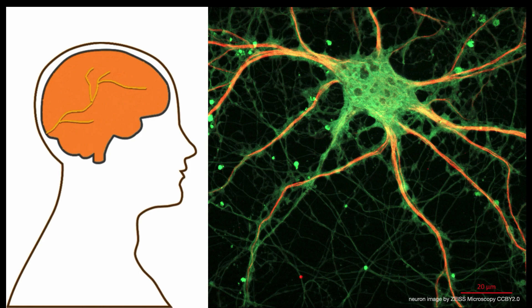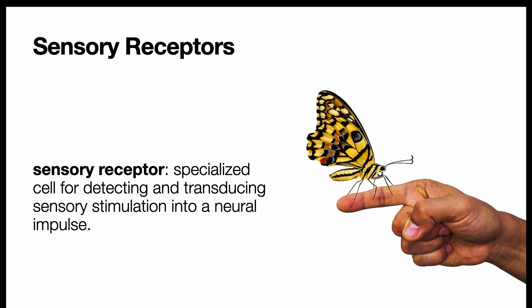Thankfully, the body is equipped to do the job with special cells called sensory receptors. A sensory receptor is a specialized cell for detecting and transducing sensory stimulation into a neural impulse.